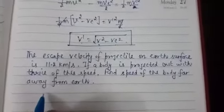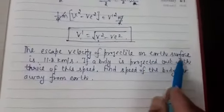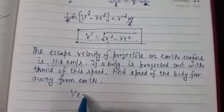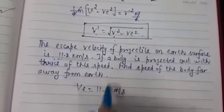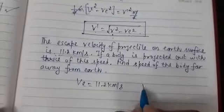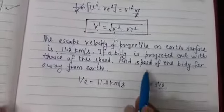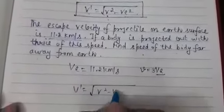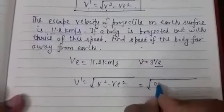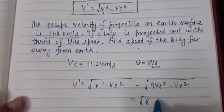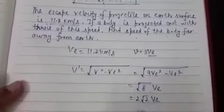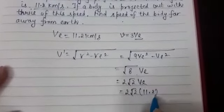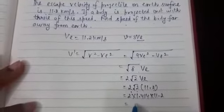Numerical example: Escape velocity on earth's surface is 11.2 km/s. A body is projected with thrice this speed (V = 3Ve). Find the speed of the body far away. V' = √(V² − Ve²) = √(9Ve² − Ve²) = √(8Ve²) = 2√2 · Ve = 2 × 1.414 × 11.2 ≈ 31.68 km per second.